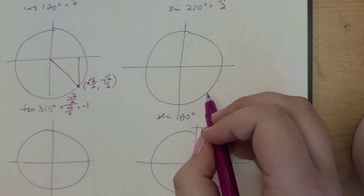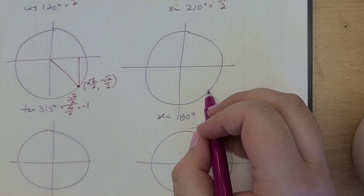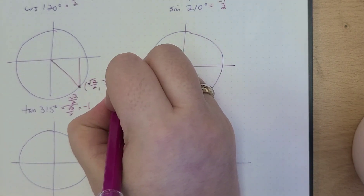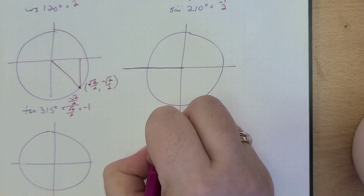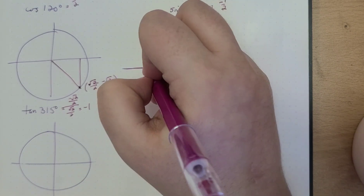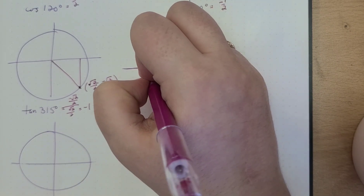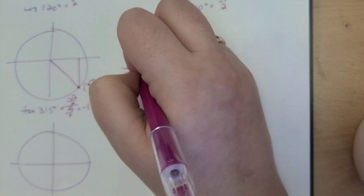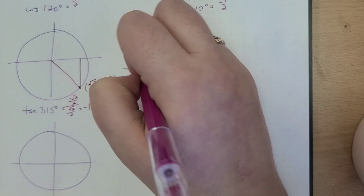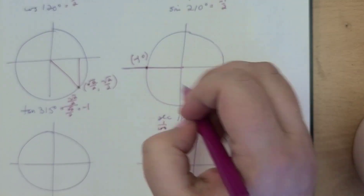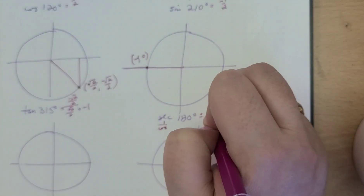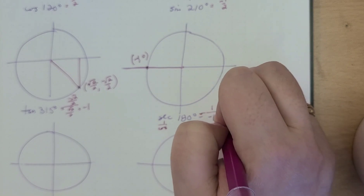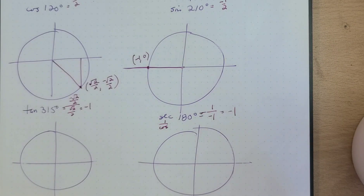Then we have the secant of 180. The secant of 180 goes right here, which is one over cosine. Since it's our unit circle, it's (−1, 0). So this is one over negative one, which is equal to negative one.